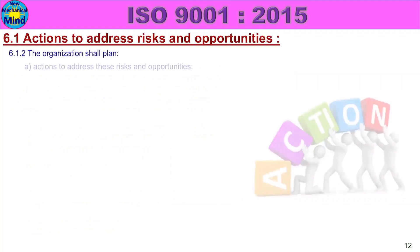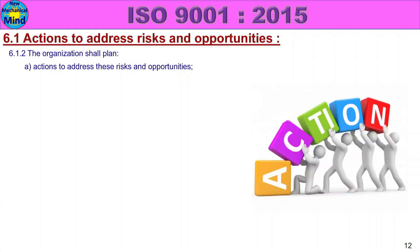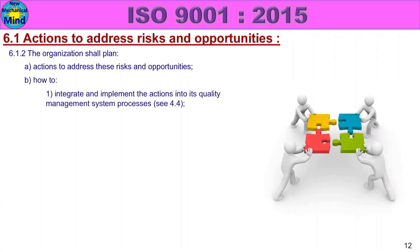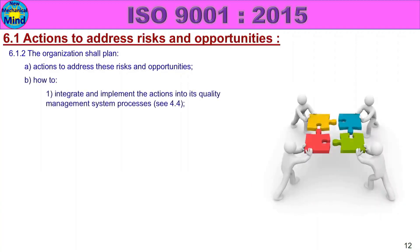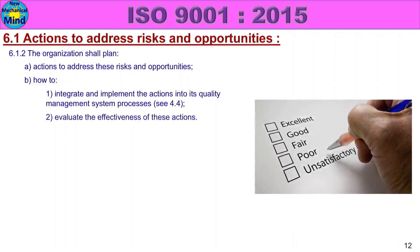To address these risks and opportunities, address the actions plan. How to integrate and implement the actions into the quality management system processes — see Clause 4.4. Risks and opportunities address actions; integrate and implement into the quality management system process. Evaluate the effectiveness of these actions.